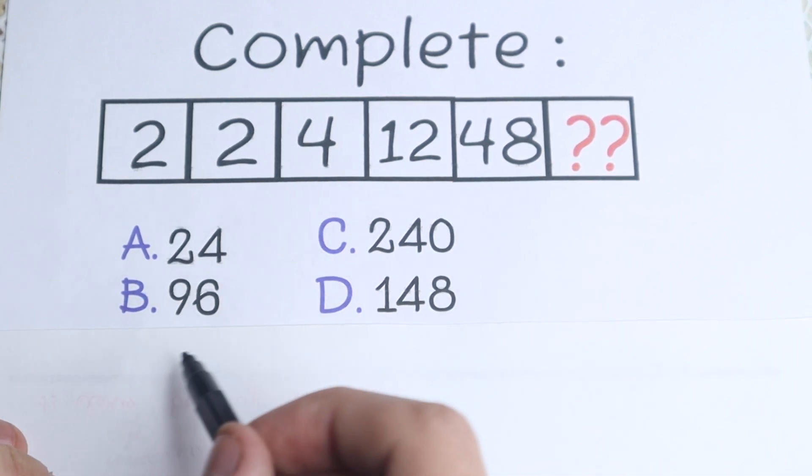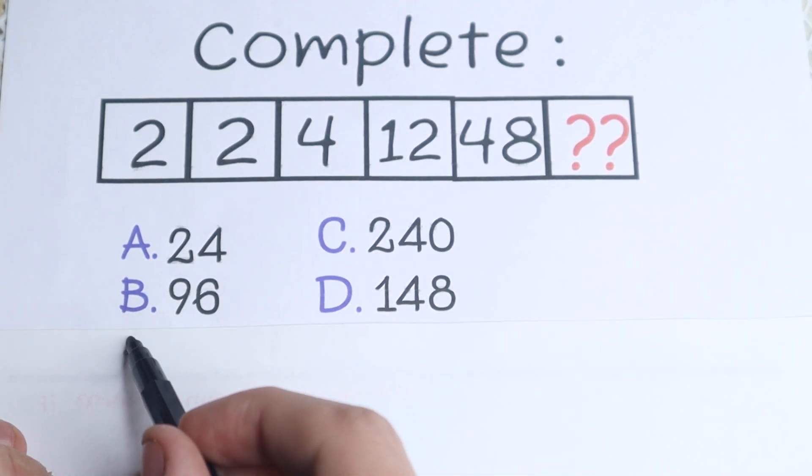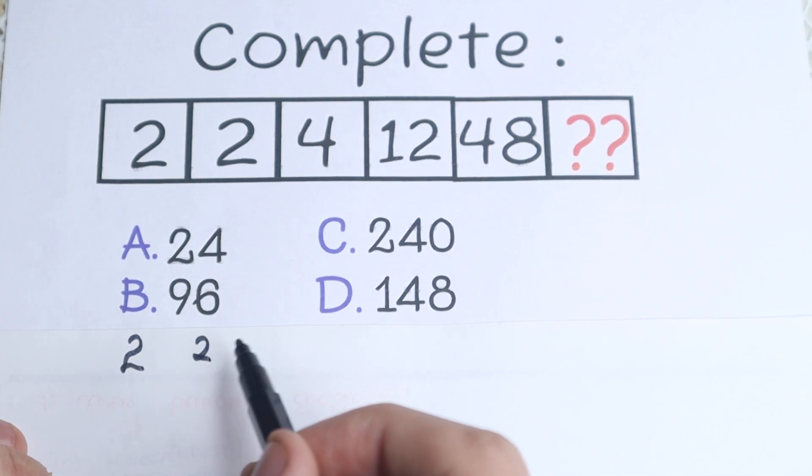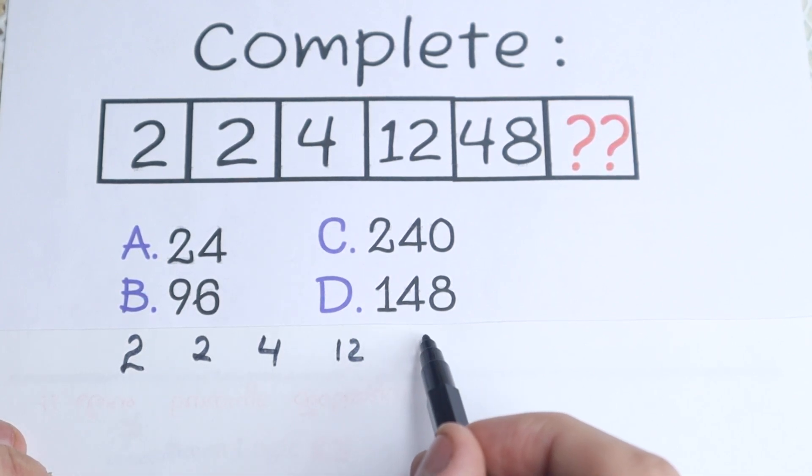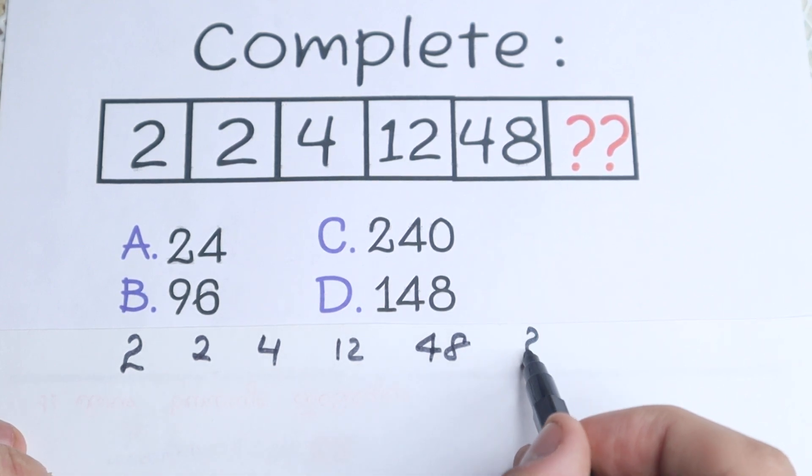How can you solve this question? Let's just rewrite these numbers. I just write this number right here in the bottom, so 2, 2, 4, 12, 48. We have these all numbers right here and we have the final number we need to find.